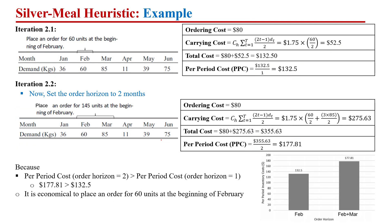Now performing iteration two. We have already met January's demand. Again considering a planning horizon of one — only February. The ordering cost is $80. The carrying cost using the same formula with T = 1 is $52.50. The total cost is ordering cost plus carrying cost, and the per period cost is $132.50 divided by one, giving $132.50.